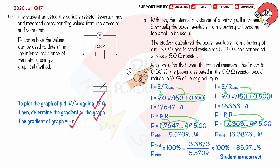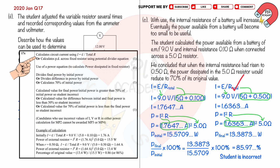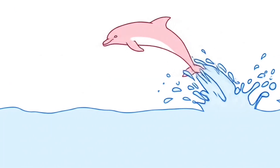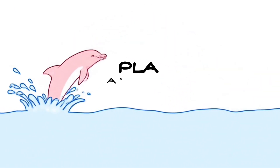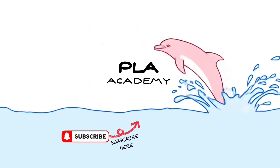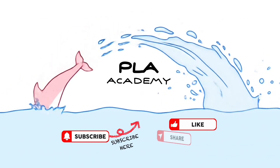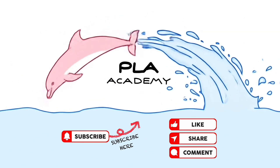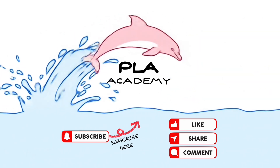You will get four marks for: calculating circuit current using I equals E over total R, using the power equation to calculate power dissipated at the fixed resistor, dividing final power by initial power, and showing the calculated ratio is greater than 70%. I really hope this video helps you out. If it does, I'd super appreciate it if you could subscribe to my channel, give this video a like, share it with your friends and leave a positive comment. Your support really keeps me motivated to create more great videos for you.